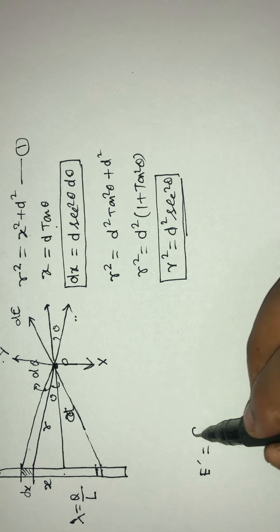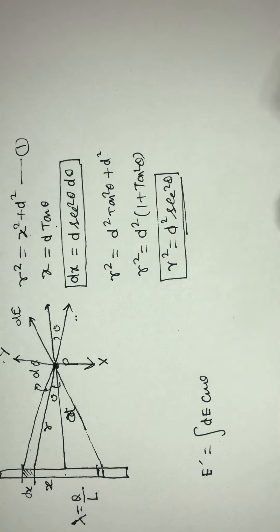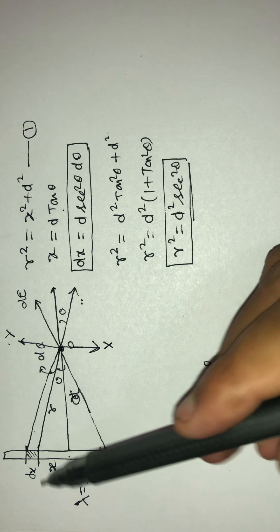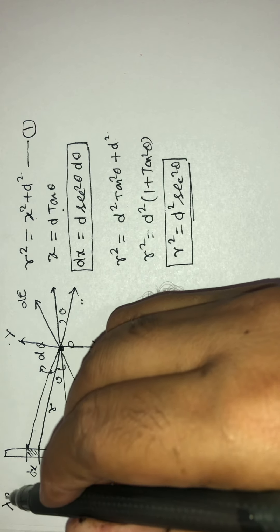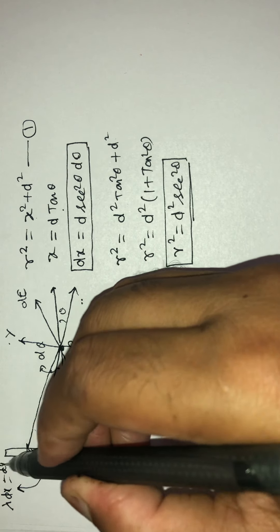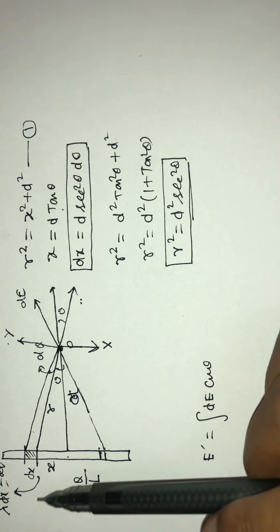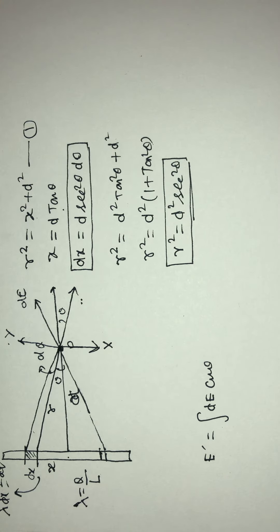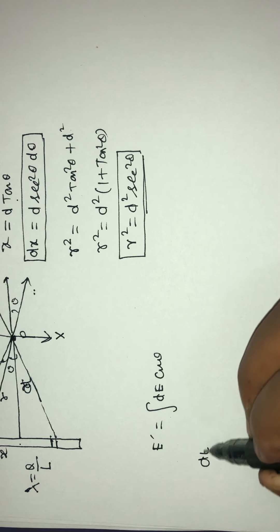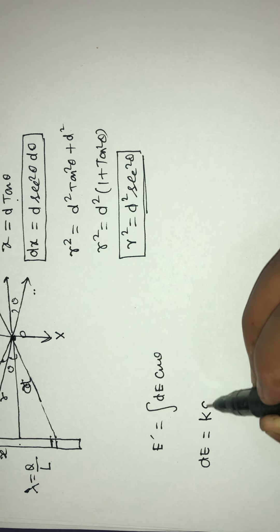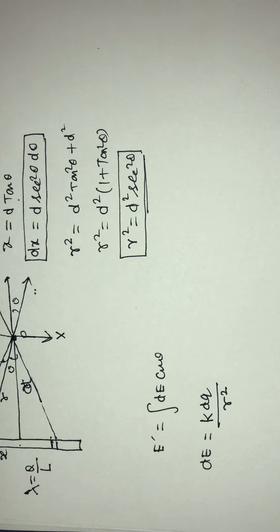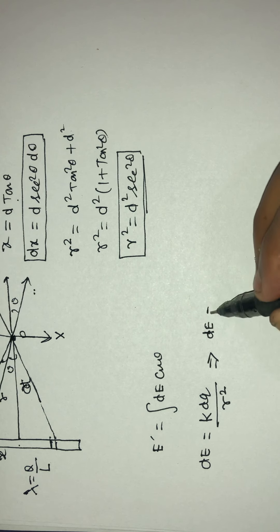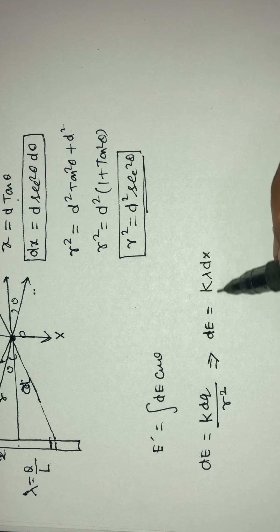For the complete rod, the total electric field will be the integration of dE·cos(theta). So E = integration of dE·cos(theta). Now, dE is the electric field due to the small element. The charge on this small element is dq = lambda·dx, because lambda is the linear charge density. So dE = k·dq / r² = k·lambda·dx / r².